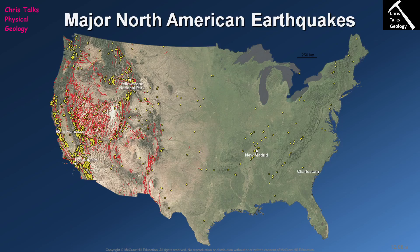The most obvious reason is that the western side of the United States is tectonically quite active, whereas the eastern side is tectonically quite stable. Why is the western side so tectonically active? To answer that question we need to go all the way back to the Jurassic. During the Jurassic, the Cretaceous, and the early Cenozoic — the Paleocene to be exact — the western side of the United States was a subduction zone.